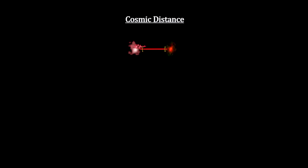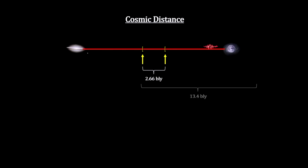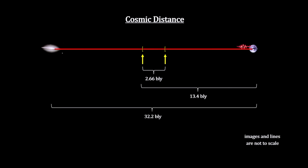But, during its long travel time, space expanded considerably. In fact, GNZ 11 was less than 2.7 billion light years away from us when the light started its journey. And the galaxy is now over 30 billion light years away.